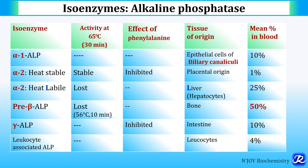The mean percentage: Pre-beta is 50%, Alpha-1 is 10%, Alpha-2 heat stable is 1%, Alpha-2 heat labile is 25%, Gamma is 10%, and leukocyte-associated is 4%.